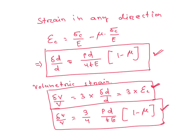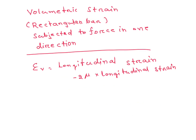For a rectangular bar subjected to force in one direction only, volumetric strain equals longitudinal strain minus 2 mu times longitudinal strain, which gives: Sigma V = (delta L / L) * (1 - 2mu).